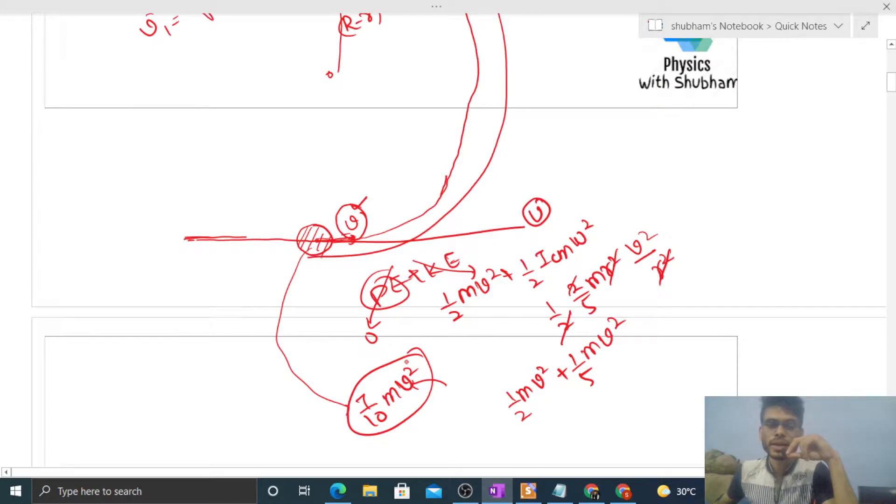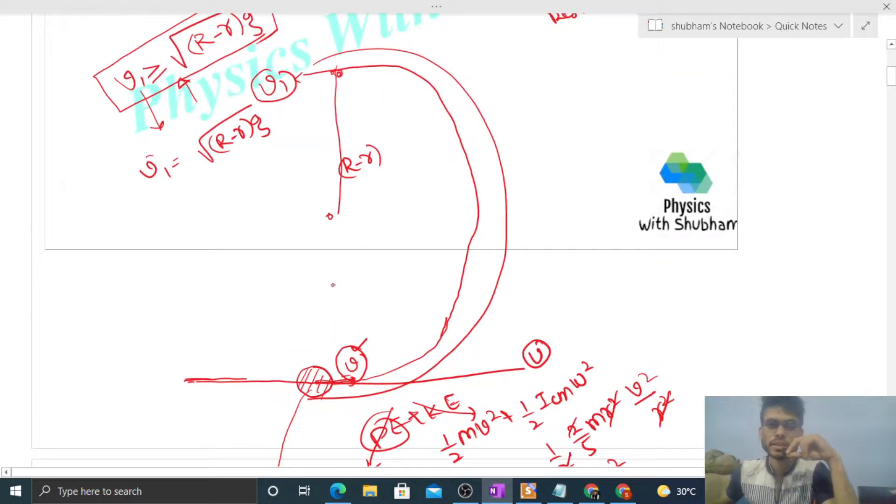So this is the mechanical energy here. Now let's compare with final mechanical energy. Finally, there will be mechanical energy - one will be potential energy and one will be kinetic energy. So what will be the potential energy? m into g into h. What is h? Look from here - this height is, after calculating, that will be twice of capital R minus small r. So this is potential energy.